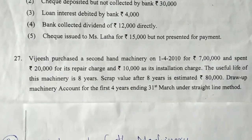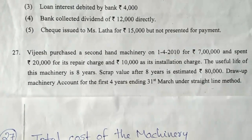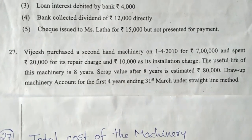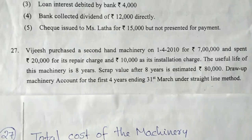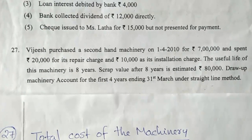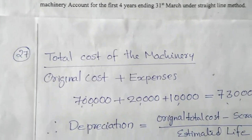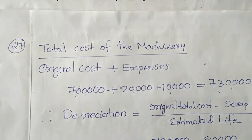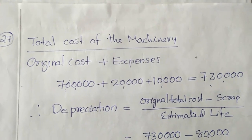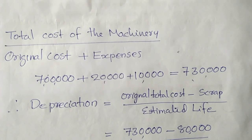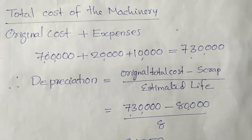Draw the machinery account for the first 4 years ending 31st March under the straight-line method. First, we calculate the total cost of the machinery account. The original cost plus expenses are added together. The depreciation formula is: Depreciation equals original total cost minus scrap value, divided by estimated life.